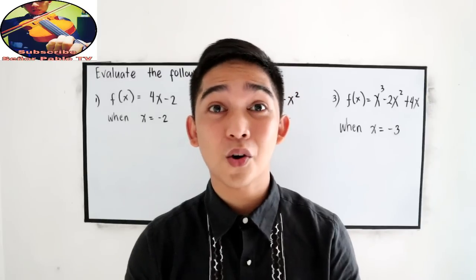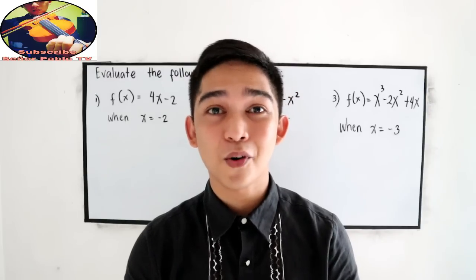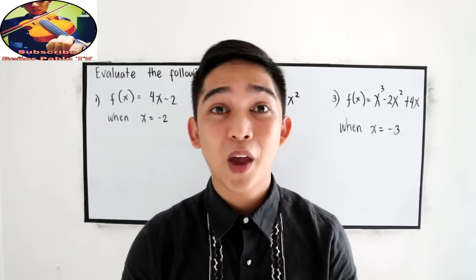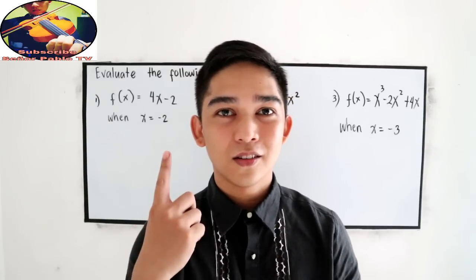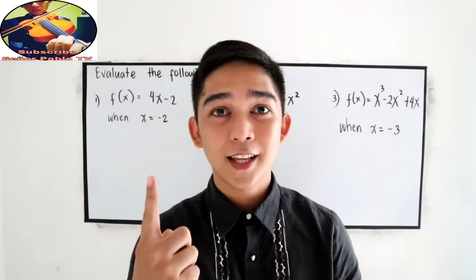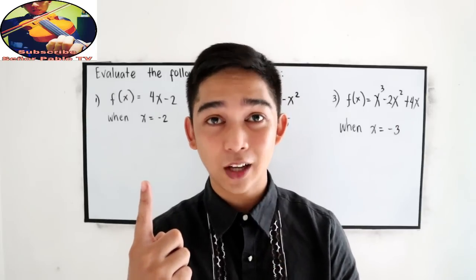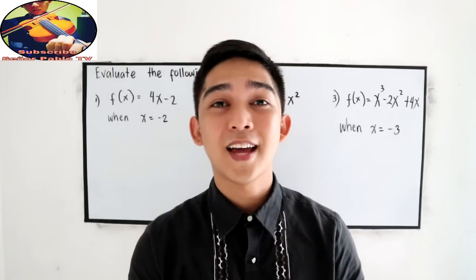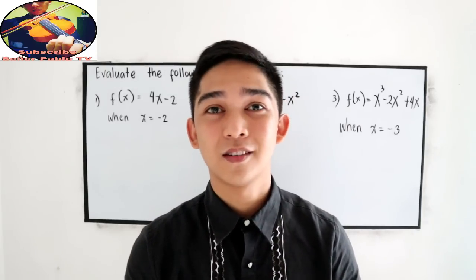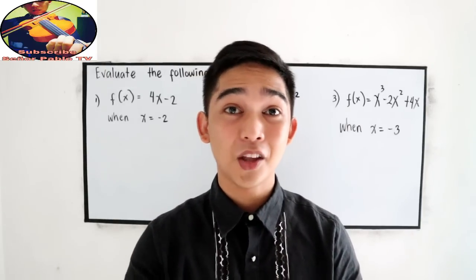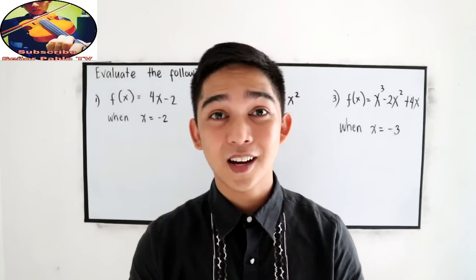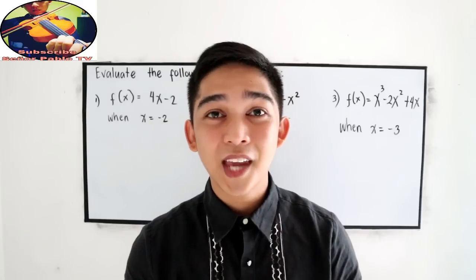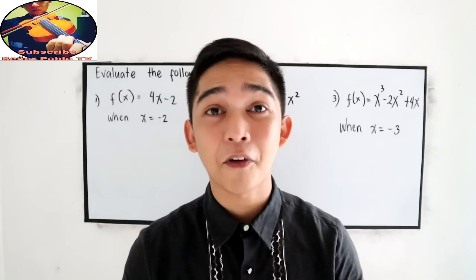We classified functions according to the number of degrees, or the number of exponents. If we have a degree of 1, that is a linear function. If we have a degree of 2, that is a quadratic function. And if we have a degree of 3, that is a cubic function. In this video, we're going to discuss how to evaluate functions.